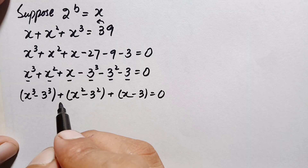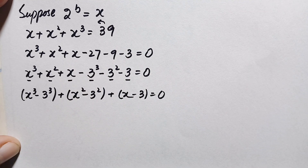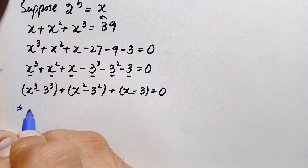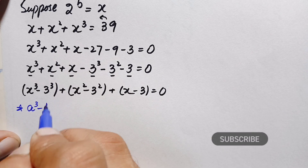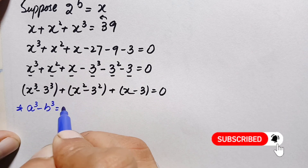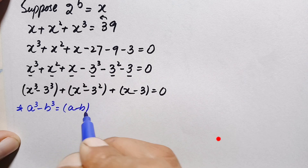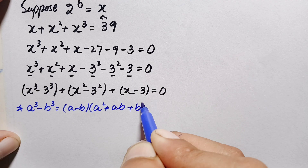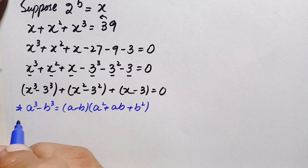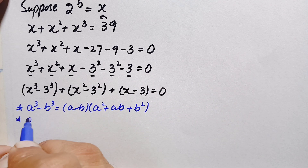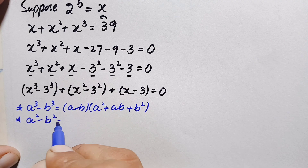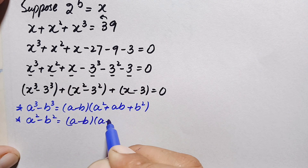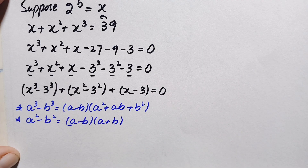For these grouped terms, we use two algebraic identities. For the cubic terms we use: a cubed minus b cubed equals (a minus b)(a squared plus ab plus b squared). For the squared terms we use: a squared minus b squared equals (a minus b)(a plus b).